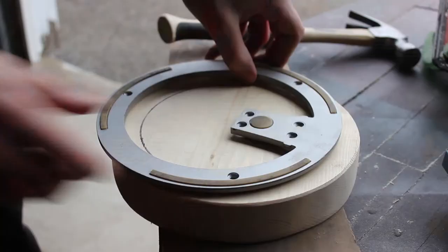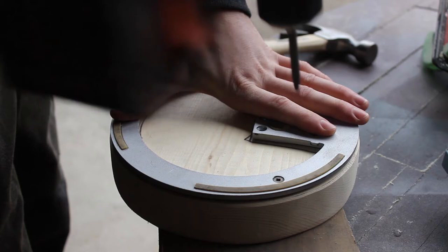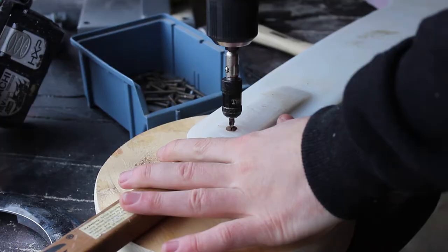Once I was finished on the bandsaw, I then cleaned up the edges with the belt sander. The next step was to screw the computer stand base onto the bottom of the wood.